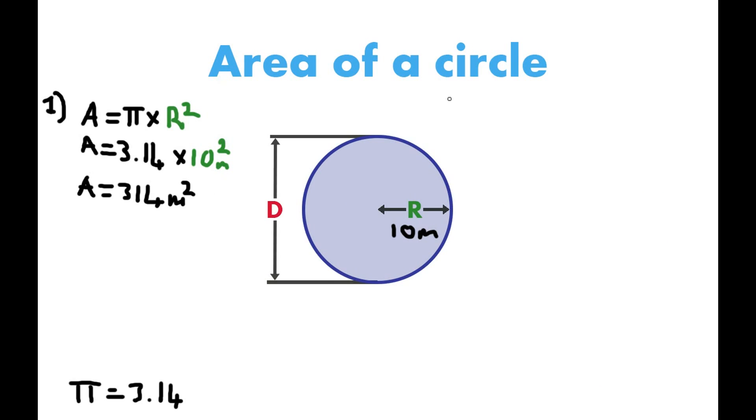So the second method, method two: we use that if we know the diameter. That's this length here. So if you know from the furthest edge, from one edge to the other of the circle, if you know that distance there, then you know the diameter. So let's say that in this example the diameter is 20 meters.